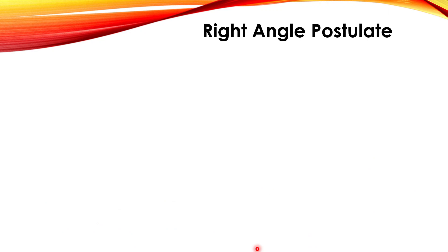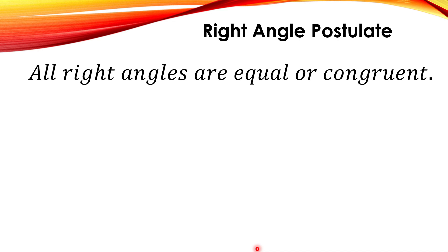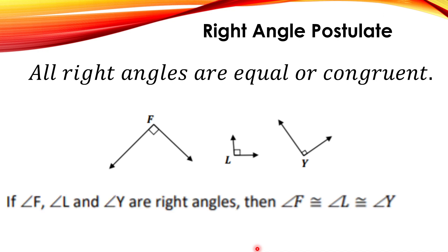We have the right angle postulate. All right angles are congruent. When is your right angle? That is 90 degrees. So here, angle F and angle L and angle Y are right angles. Then the measurement of angle F is congruent to angle L and is congruent also to angle Y. This symbol is for congruent and this is for angle.